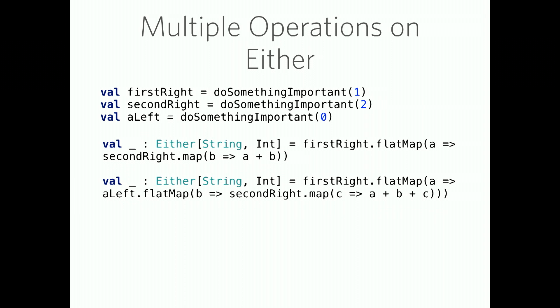Often, we have a situation where you may want to do multiple operations on this value. Here's an example of that using maps. First of all, we have a handful of variables. First right, second right, and a left. I bet you can guess which ones return rights and lefts. In this first example, we are using just the first right and the second right, so this will evaluate to a right of three. In this second example, we've introduced the left. Nothing past this point will evaluate, and we'll just be left with a left, or we'll be left with what a left was, which is you chose wrong.